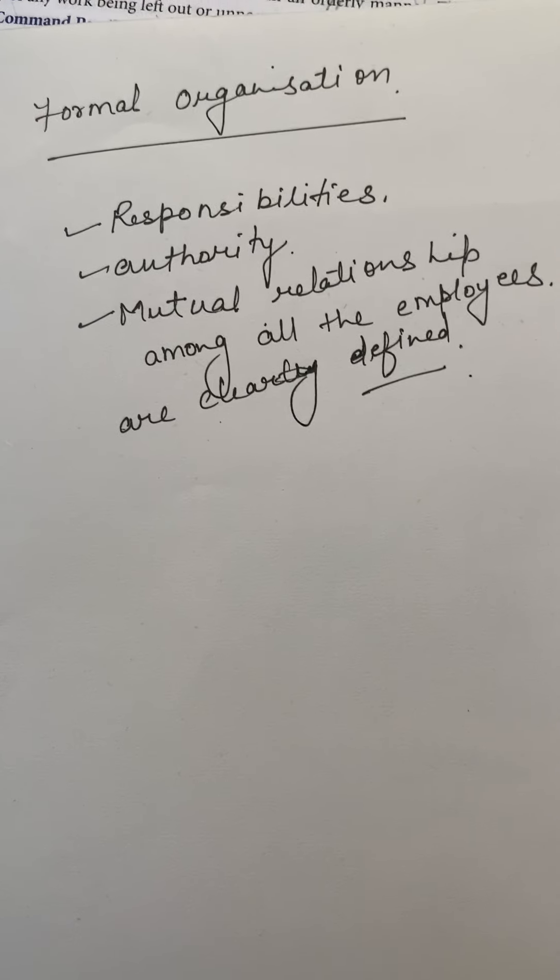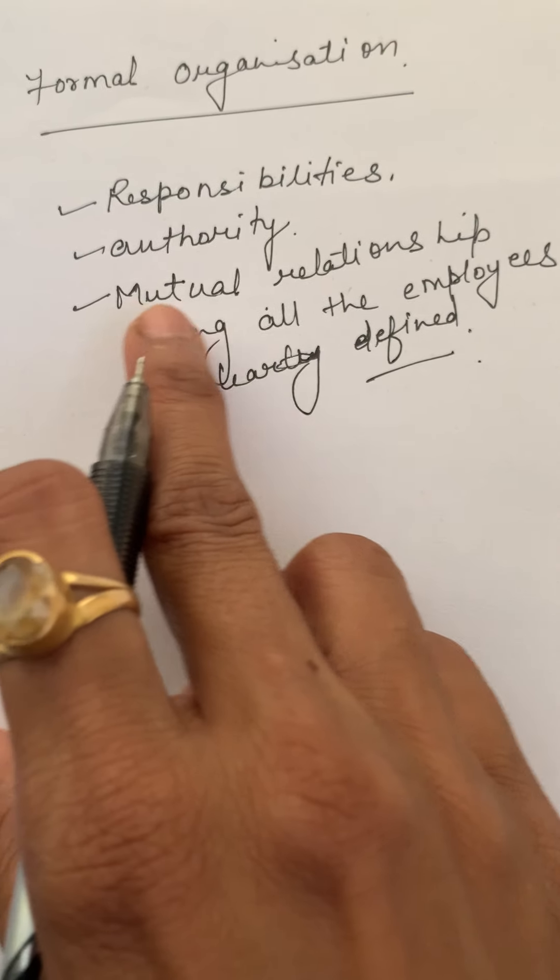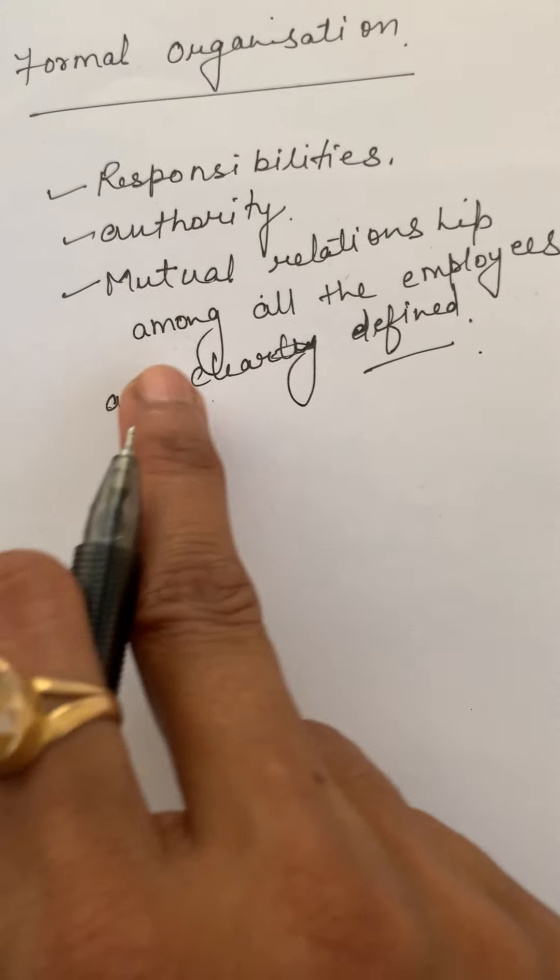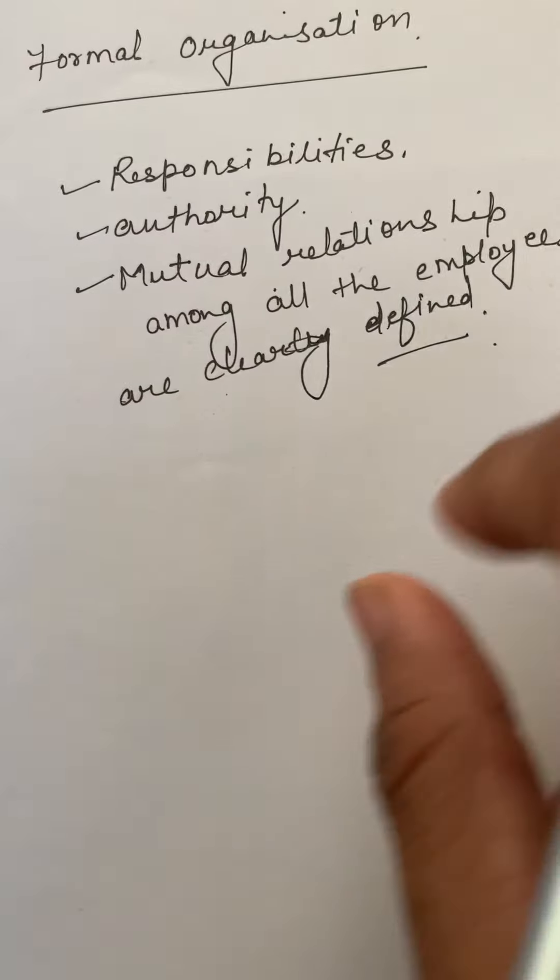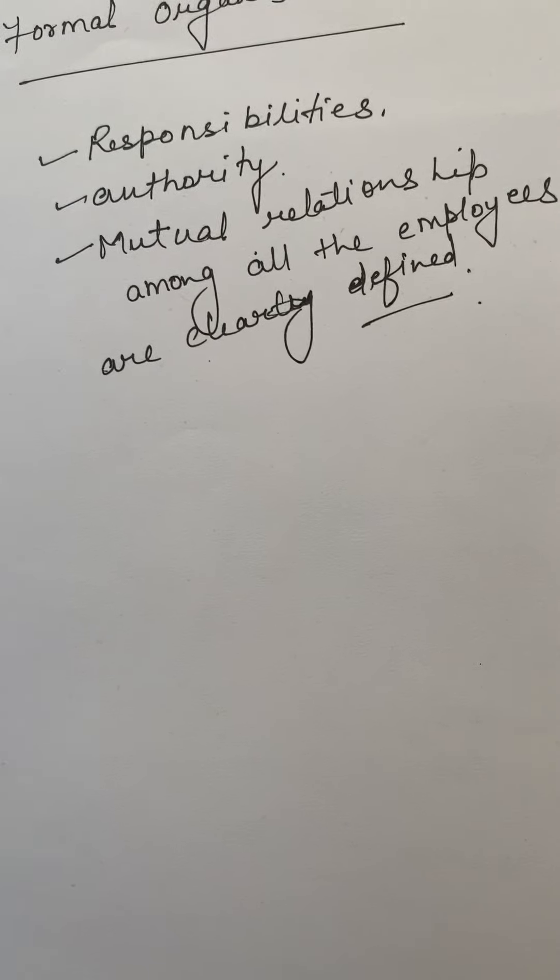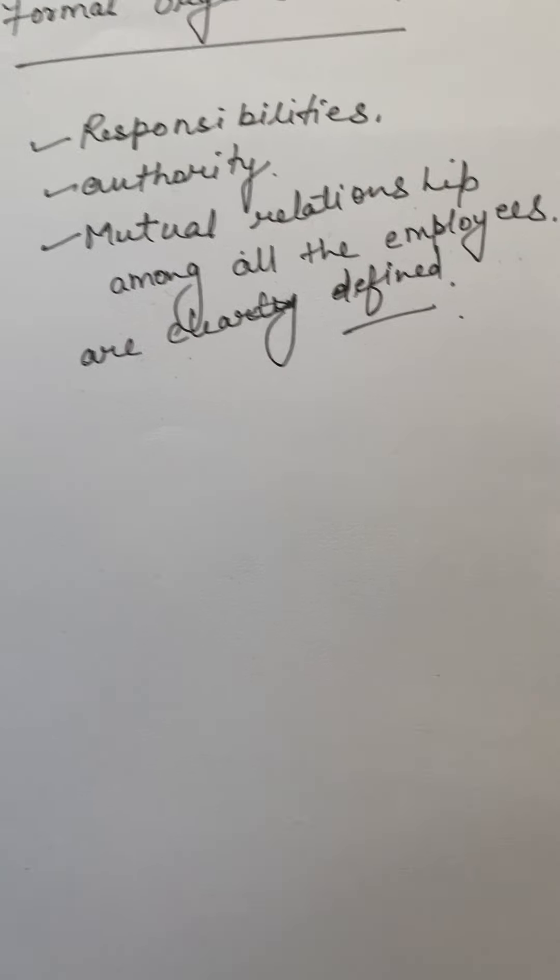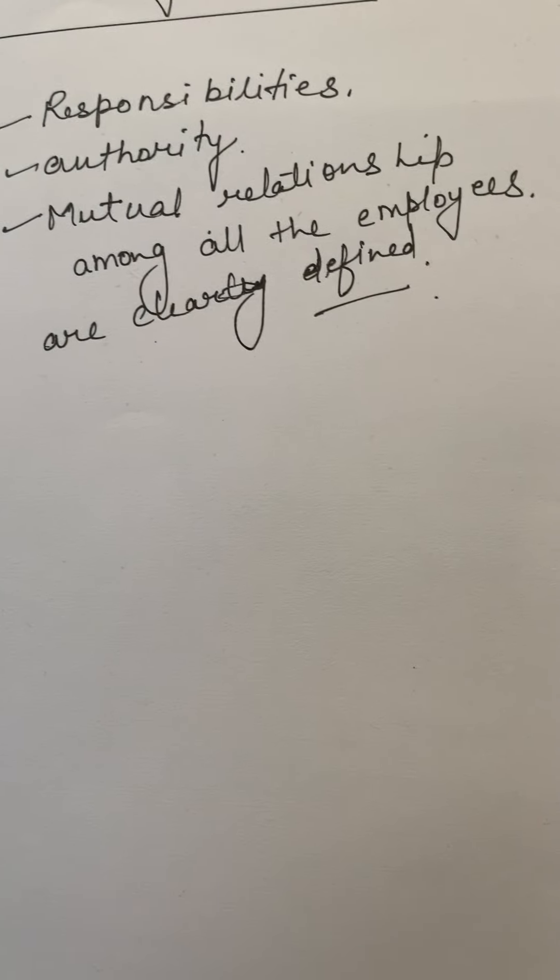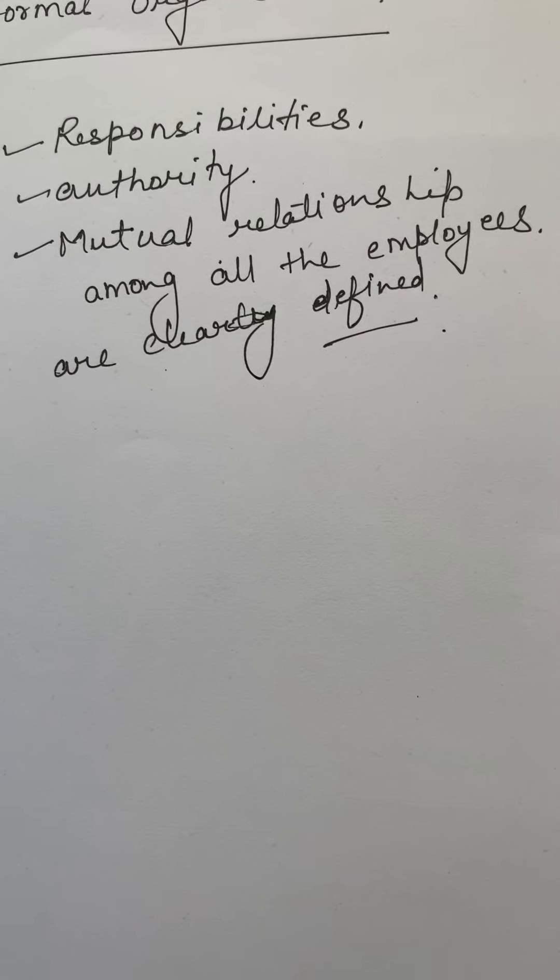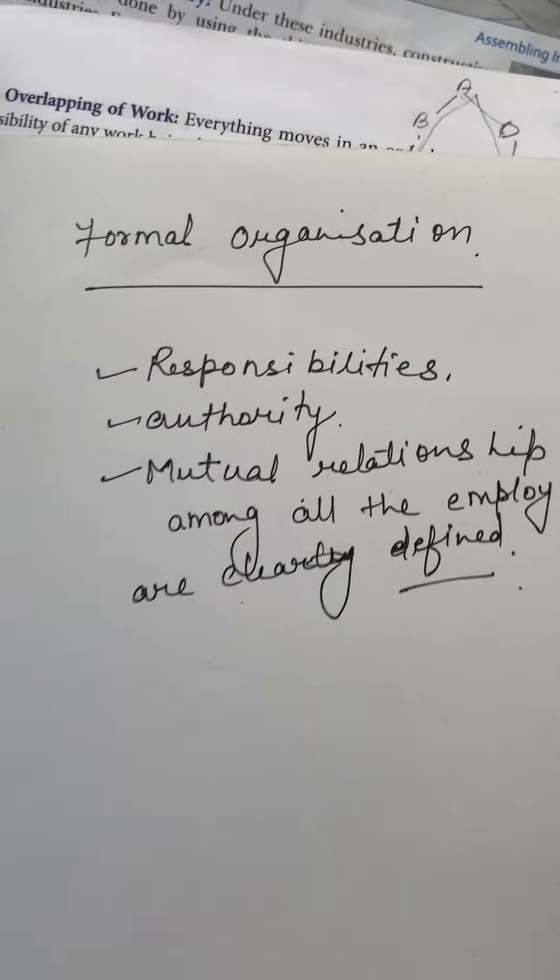Like what work to be done, what are the responsibilities, what is the authority, how much power to take decision, what is the mutual relation, what is the relationship among the various peoples in an organization - all these are clearly defined. We know our responsibilities, what are authorities, how much power we have, what is the relation between various peoples, who is junior to us - so that is formal organization.